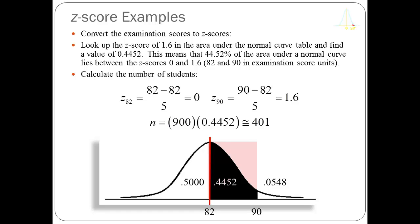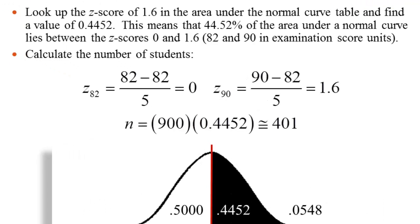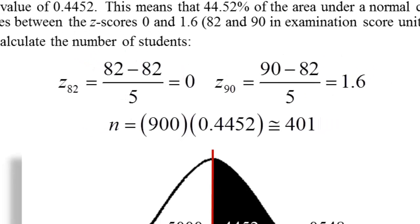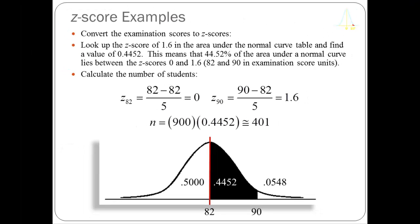Either using the table or doing subtraction — 0.5 minus 0.4452 — I've also labeled the area in the tail, the smaller white area to the right, as 0.0548. I didn't really need that piece of information, but I labeled it to show that these three areas sum to 1. So now I can solve for the number of students: 900 times 0.4452 gives approximately 401 students that had scores in this range. This is a straight table lookup — I only had to calculate the Z-score for 90, enter the Z-table with 1.6, look up 0.4452, do the multiplication, and I'm done.